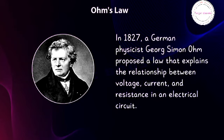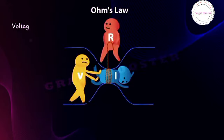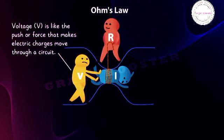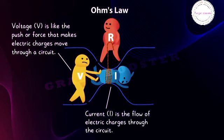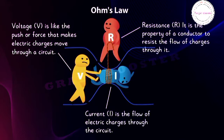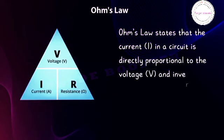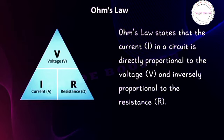Ohm's Law: in 1827, German physicist George Simon Ohm proposed a law explaining the relationship between voltage, current, and resistance in an electrical circuit. Voltage V is like the push or force that makes electric charges move through a circuit. Current I is the flow of electric charges through the circuit. Resistance R is the property of the conductor to resist the flow of charges — resistance slows down the flow of electric charges. Ohm's law states that the current I in a circuit is directly proportional to the voltage V and inversely proportional to the resistance R.